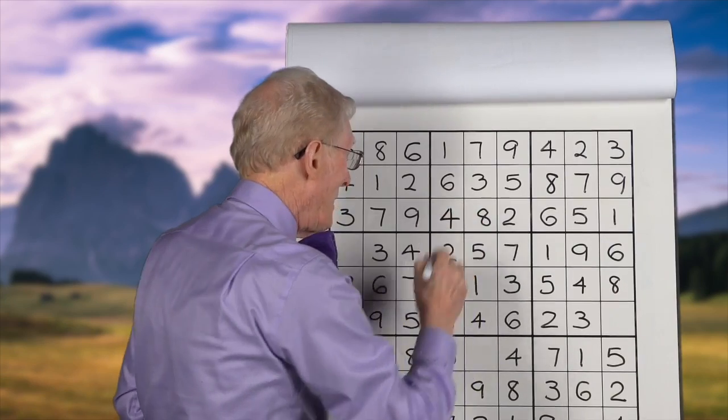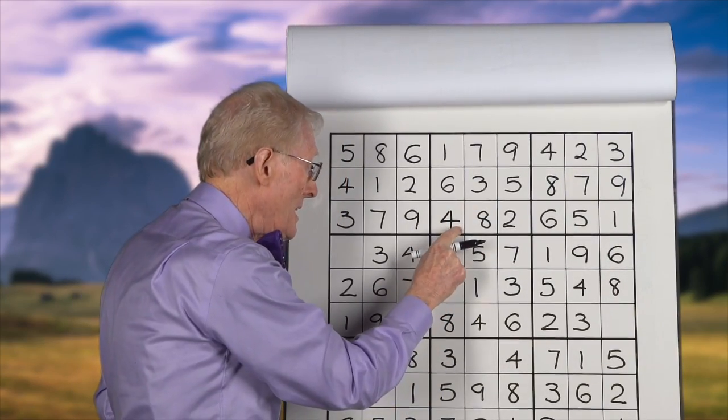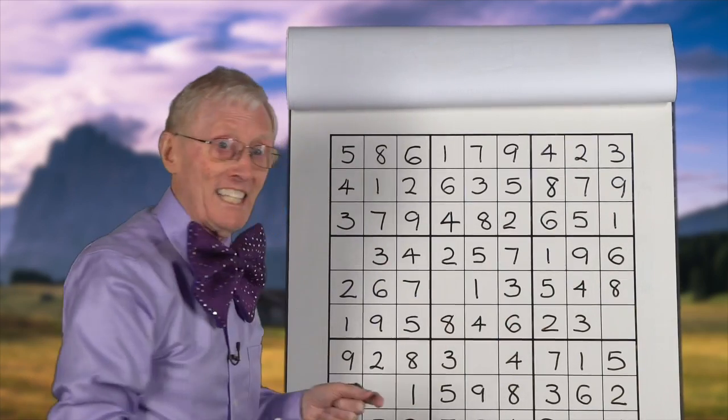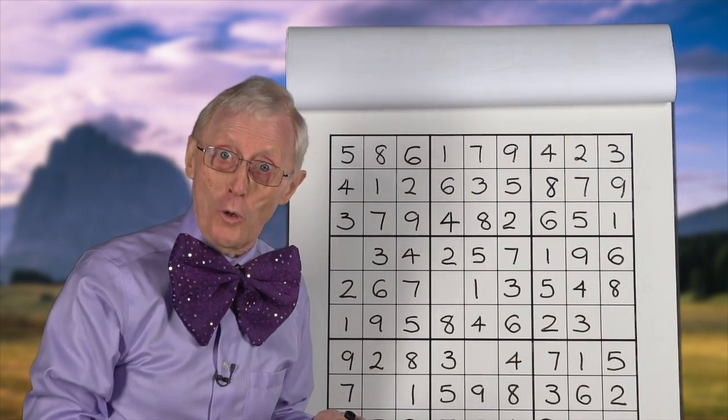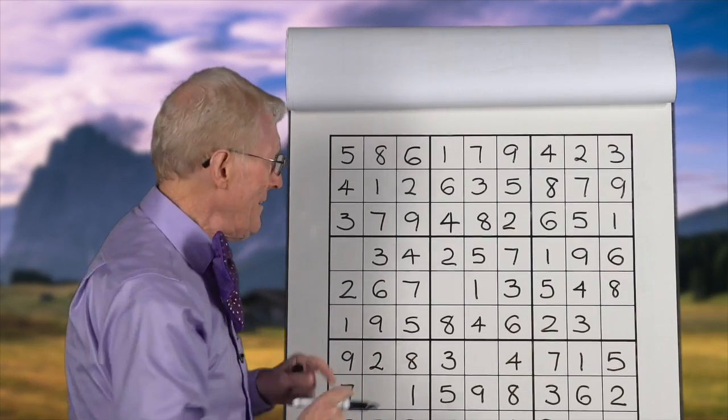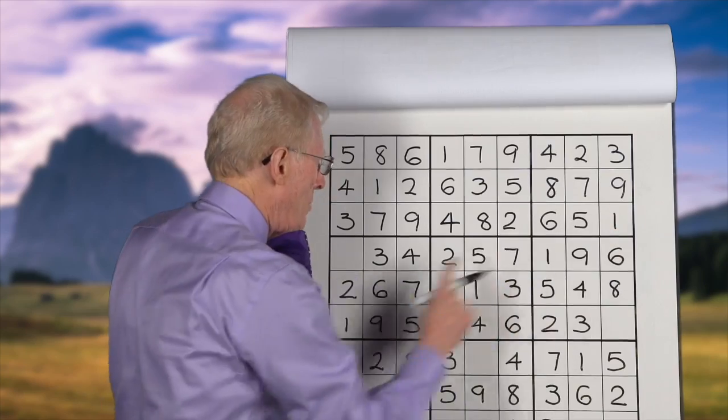if I'd have put a 3 in here, we would have had two 3s in this row, and that is a no-no. Got it? We can't do that with Sudoku puzzles. We cannot have a number repeated in a row.